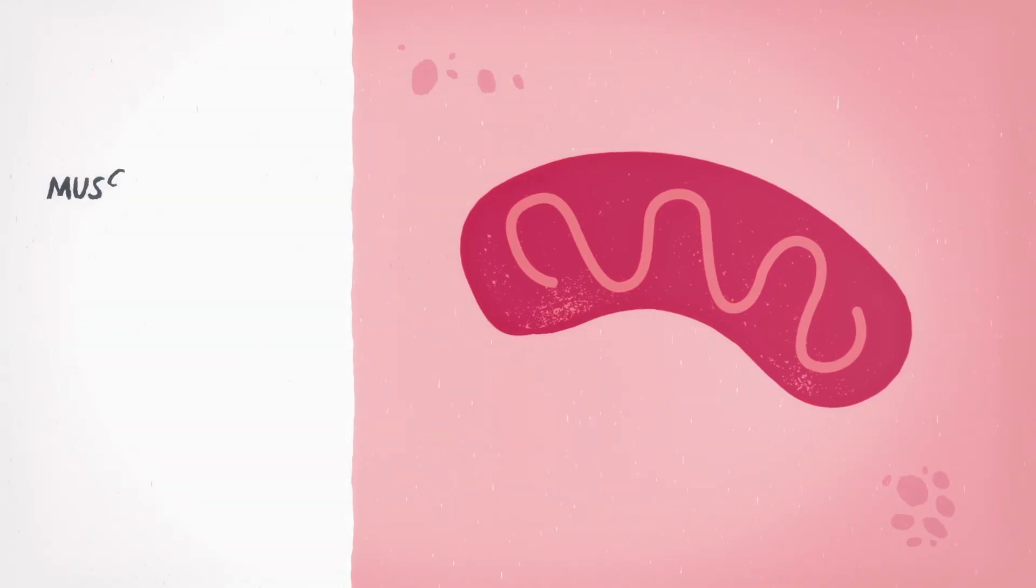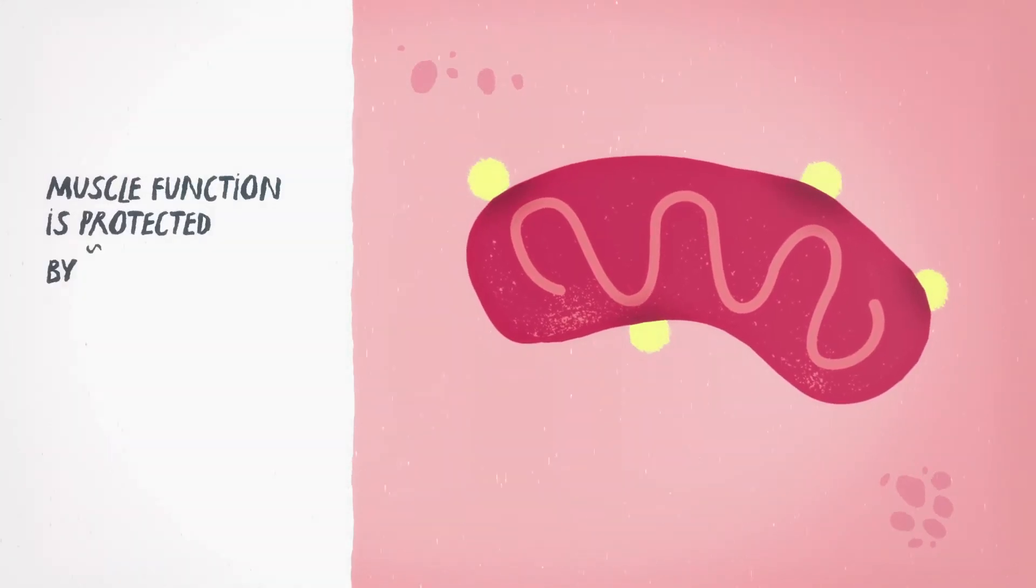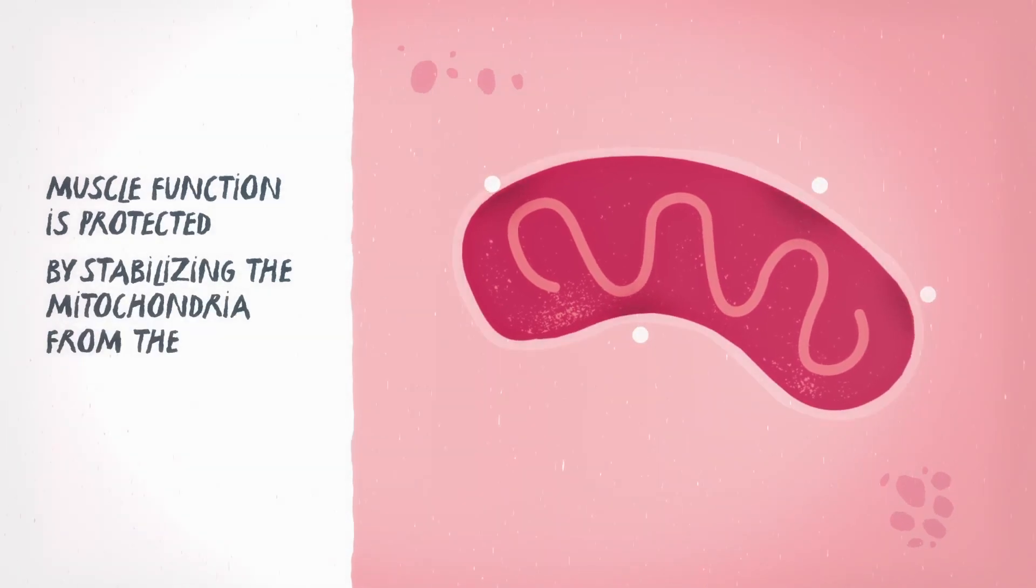In the third, muscle function is protected by stabilizing the mitochondria from the effects of the disease.